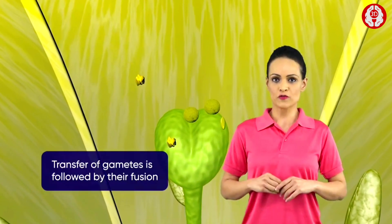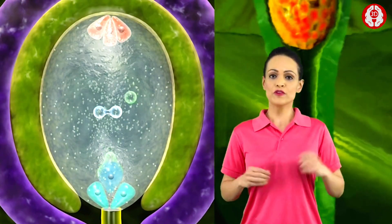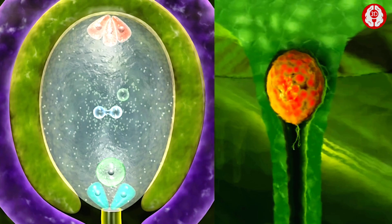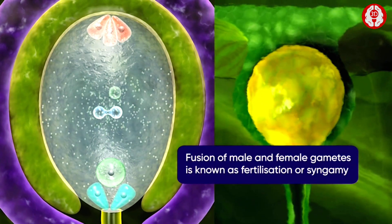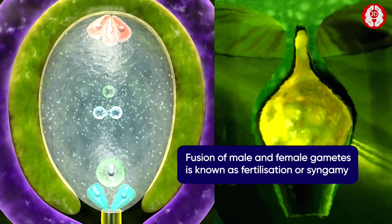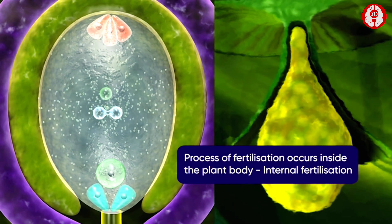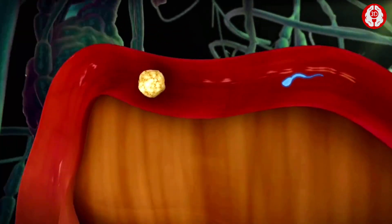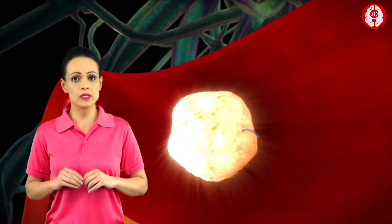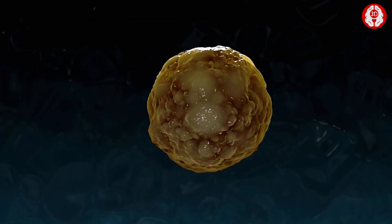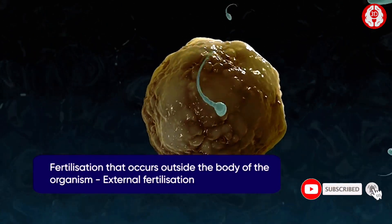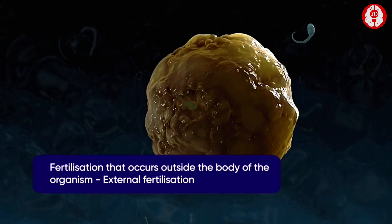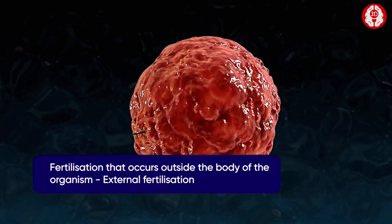The process of transfer of gametes is followed by their fusion. The male gamete fuses with the ovule, which is the female gamete. This fusion of male and female gametes is known as fertilization or syngamy. Since the process of fertilization occurs inside the plant body, it is referred to as internal fertilization. Same is the case with animals like human beings, where fertilization occurs within the body of the organism, also called internal fertilization. In fish and other amphibians, fertilization occurs outside the body of the organism, and this type is called external fertilization.